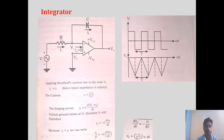The current flowing through resistance R can be written as I1 = (VI − V1) / R. But what is V1? V1 is 0 since V2 is grounded, because of the virtual ground concept.